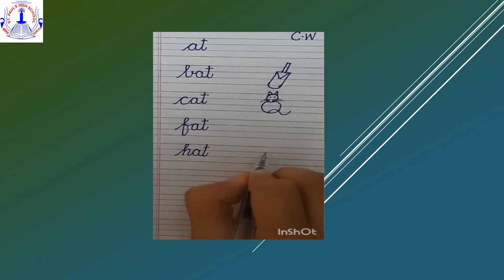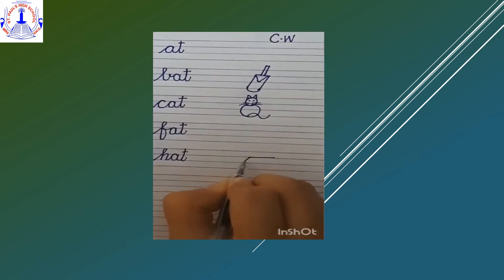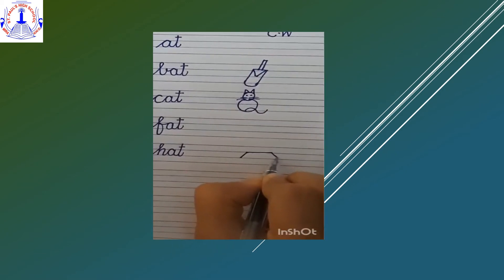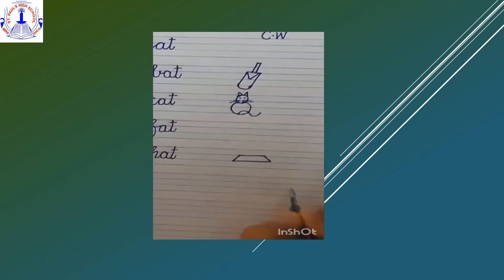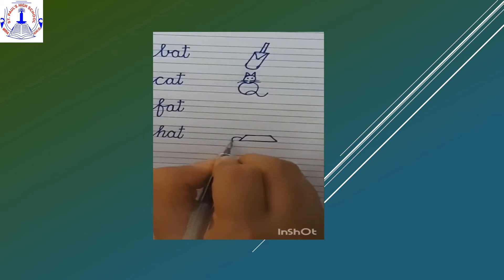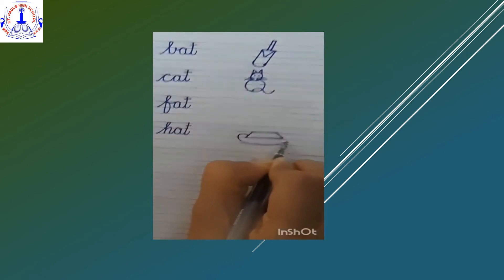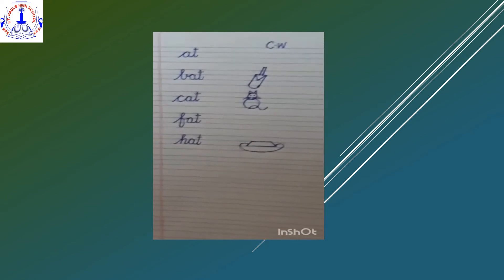Now leave two finger space. Draw a sleeping line, two slanting lines, one more sleeping line, and a curve from one corner to the other. H-A-T, hat.